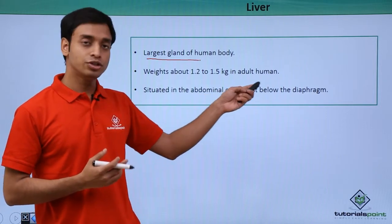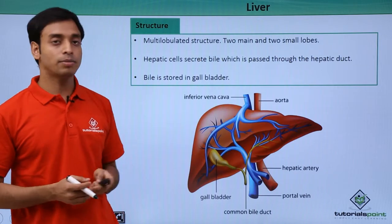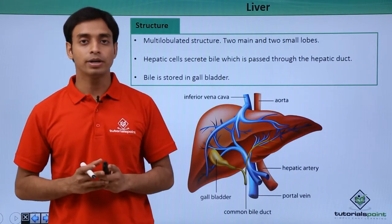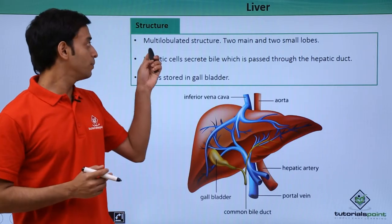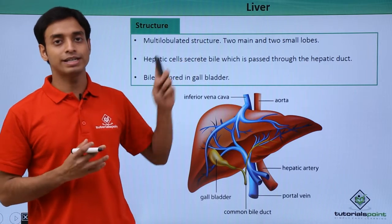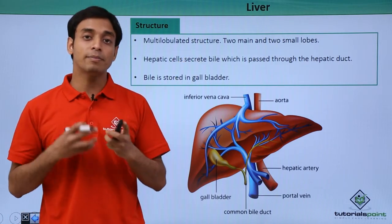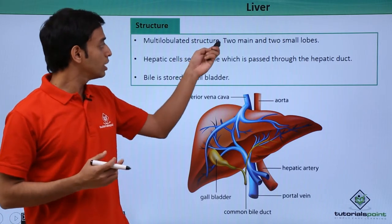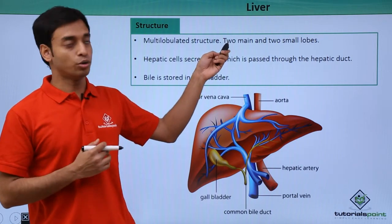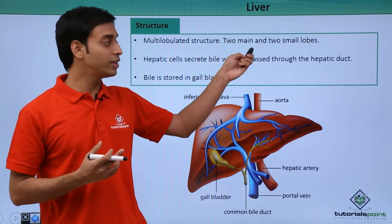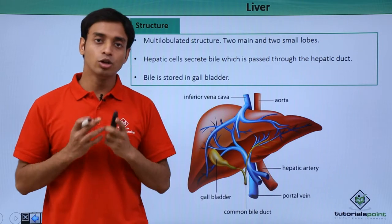The liver is situated in the abdominal cavity, just below the diaphragm. Now let us talk about the structure of a typical liver. The liver is a multi-lobulated structure — that is, it is made up of different lobes. Mostly there are four important lobes: two main lobes and two smaller lobes.